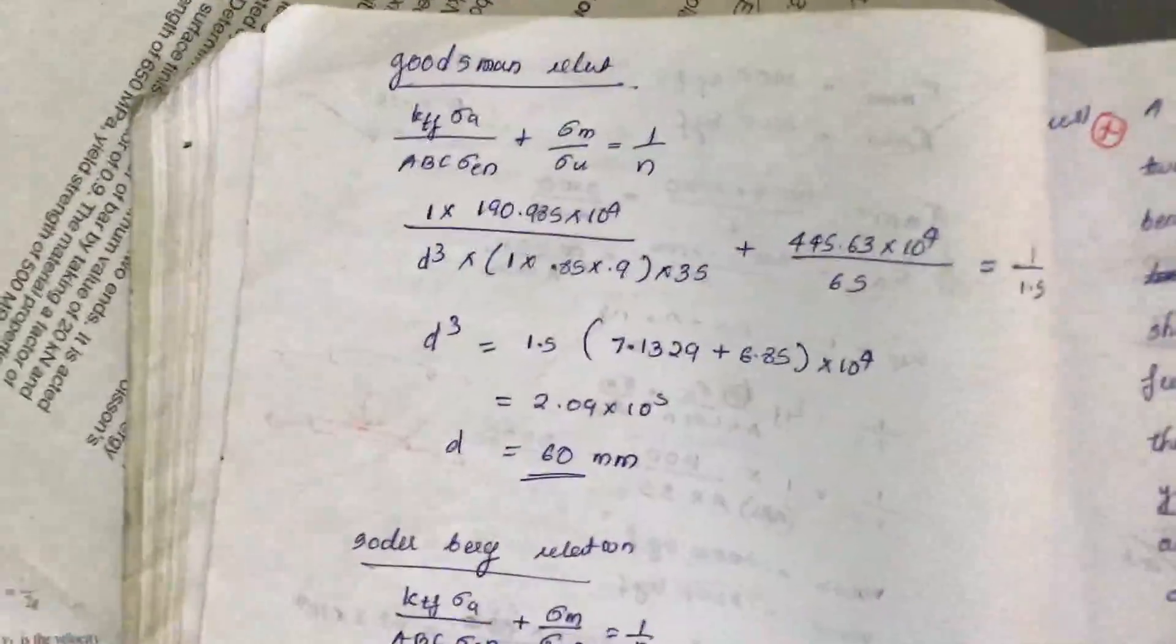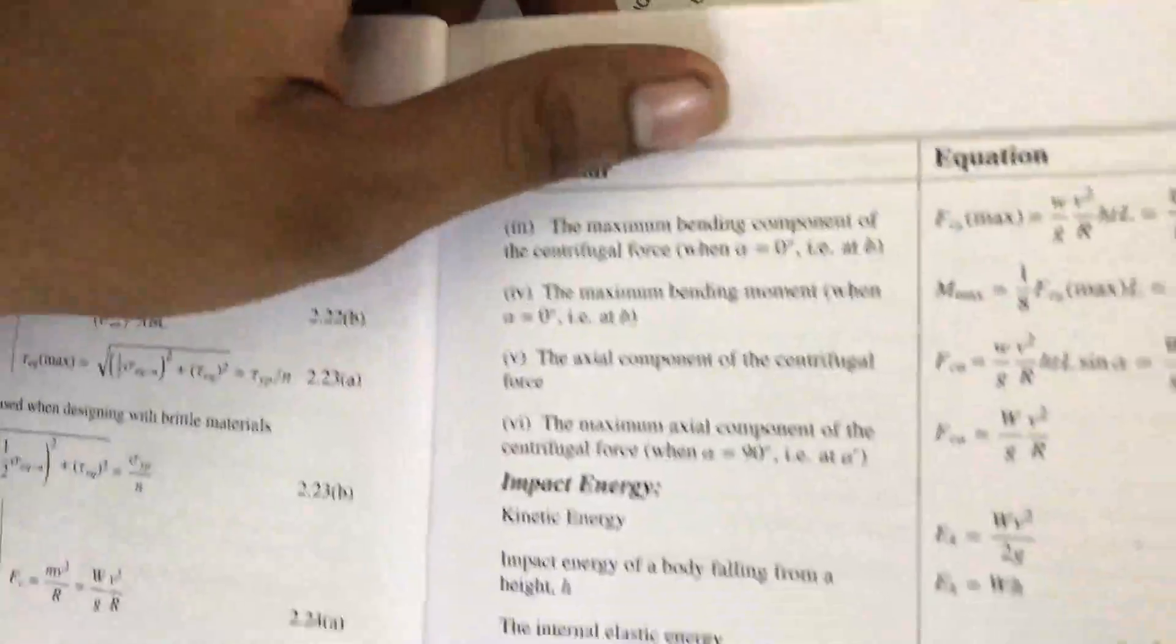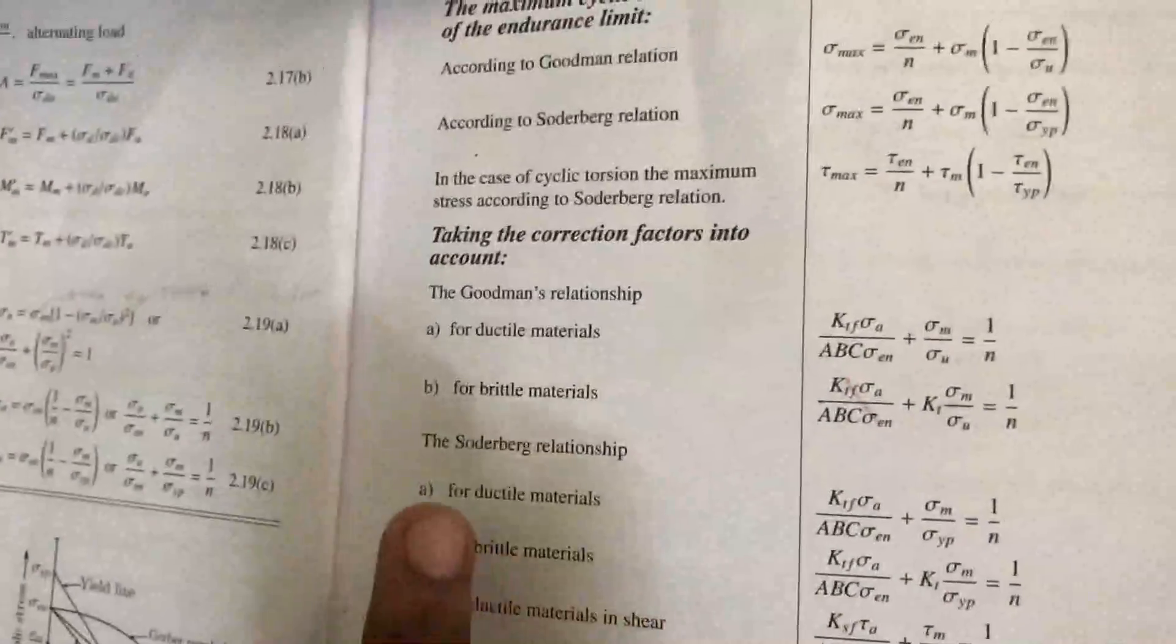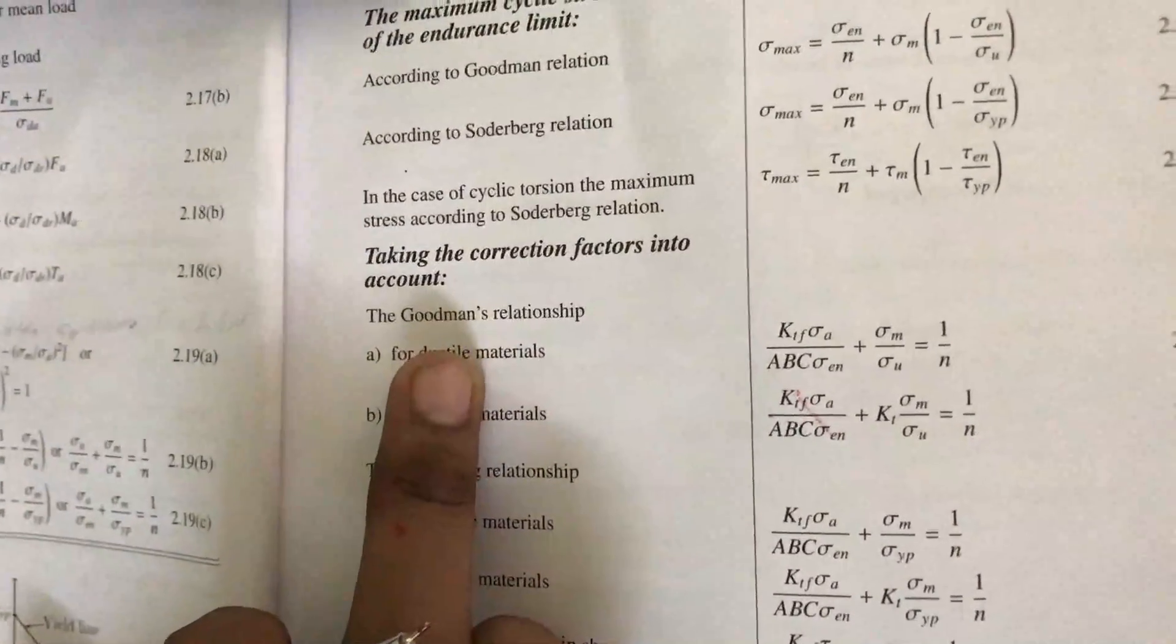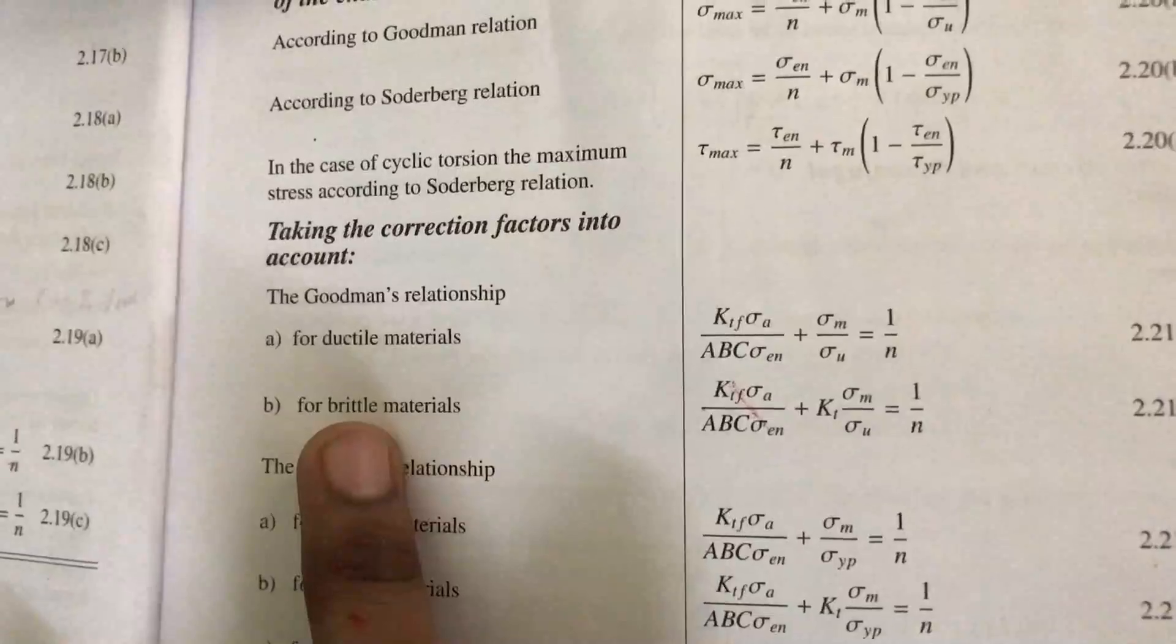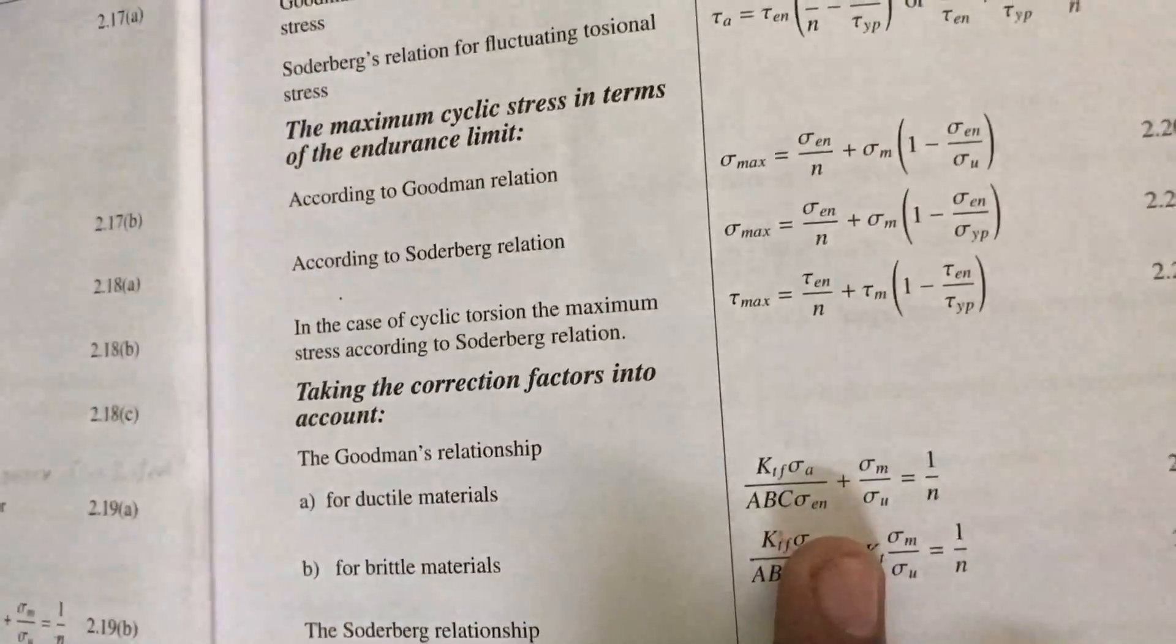Now, by using Goodman's relation - here we have the Goodman relation for a ductile material.